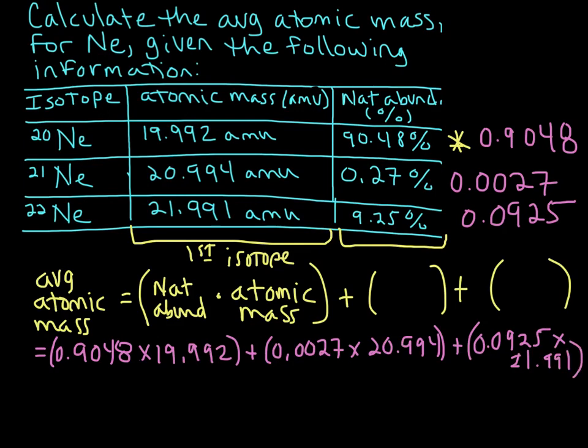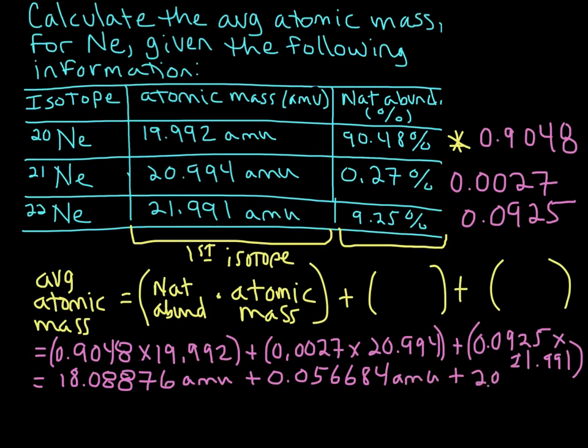Now if we run this through the calculator, we are going to get, for each term, 18.08876 amu plus 0.056684 amu plus 2.0341 amu.